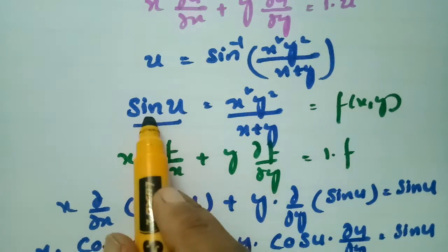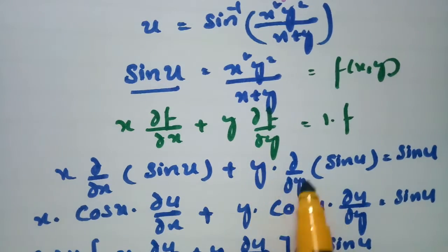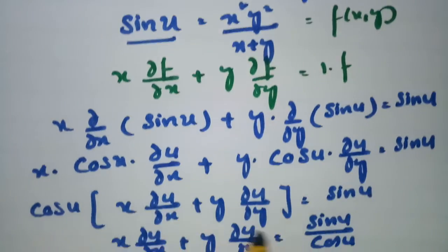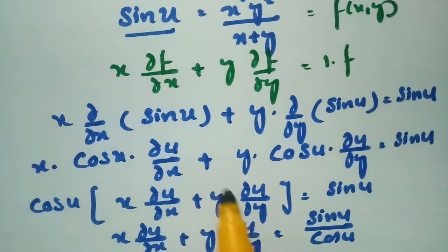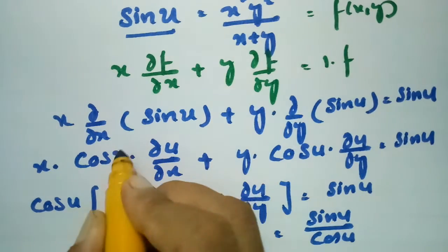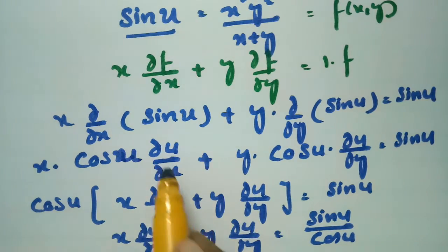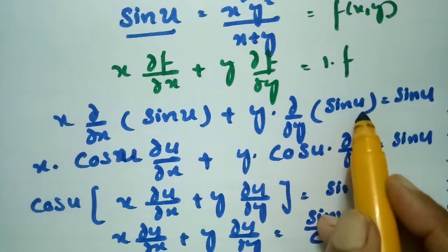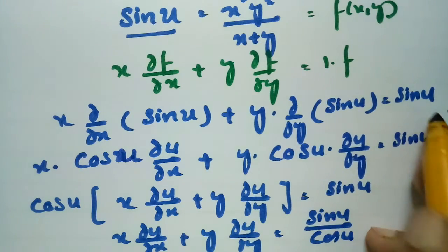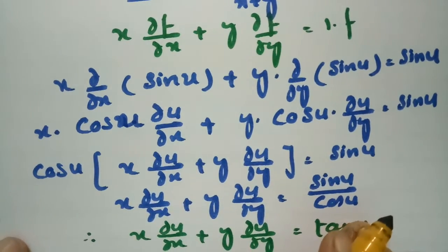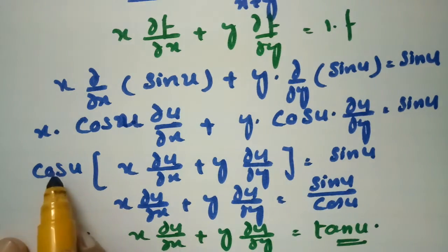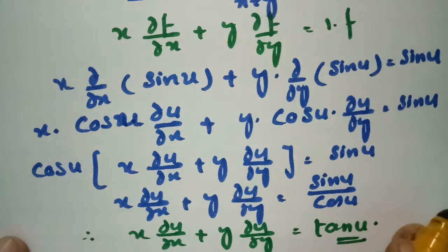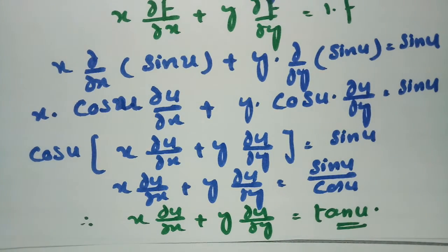Expanding using the chain rule: x·cos u·∂u/∂x + y·cos u·∂u/∂y = sine u. Taking cos u common: x·∂u/∂x + y·∂u/∂y = sine u / cos u = tan u. This confirms our result.